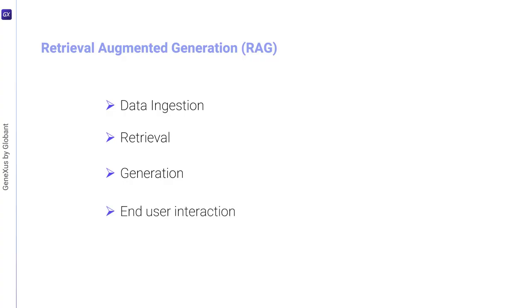The last phase is interaction with the end user. GeneXus Enterprise AI facilitates smooth and efficient communication between end users and RAG assistants, completing the cycle and providing answers to queries in an efficient manner.